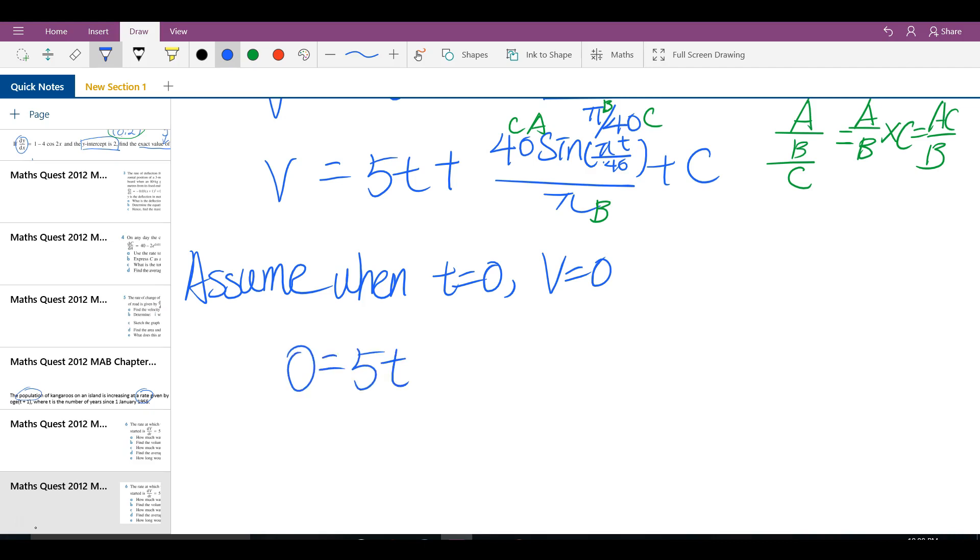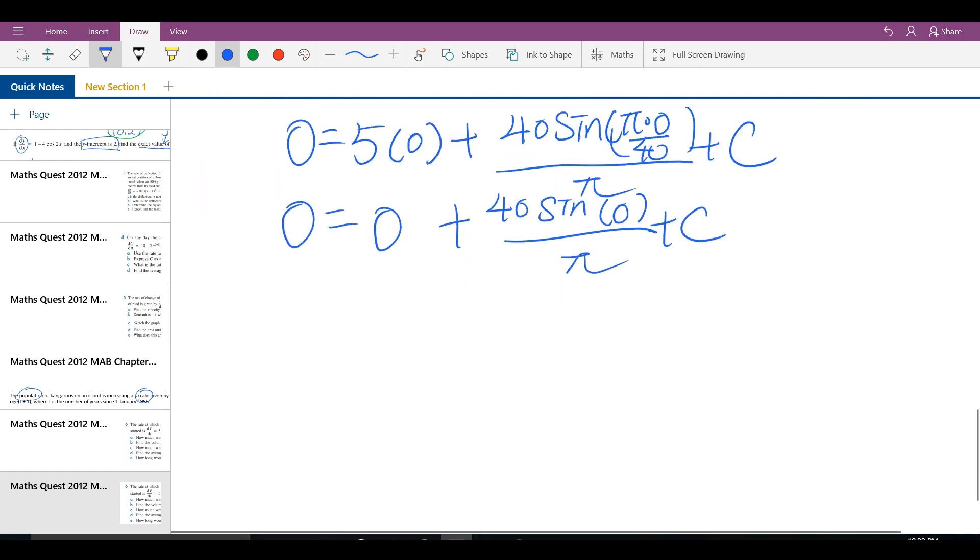So it says the rate at which water is pumped out of a dam in liter per minute, T minutes after the pump is started. So that means before the pump starts, there will be no water pumping out. Make sense? So we have to make an educated assumption here. Assume when T equal to zero, V equal to zero. Before you start the pump, no volume of water is being pumped out. So let's sub that in into the equation.